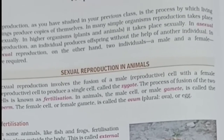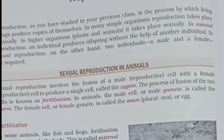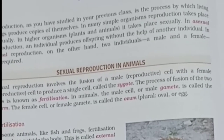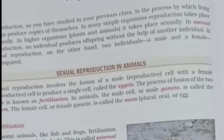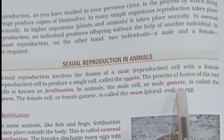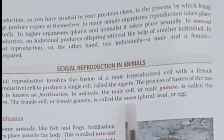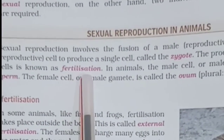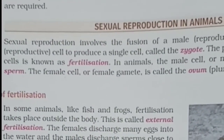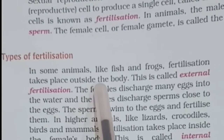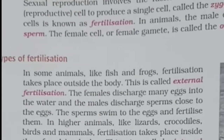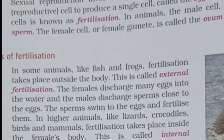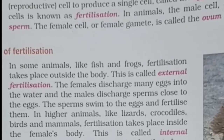This process of fertilization takes place in animals and also in plants. The male gamete is the sperm and the female gamete is the ovum. Now, our next topic is types of fertilization. The process of fusion of the male gamete and the female gamete is called fertilization. The two types of fertilization are external fertilization and internal fertilization.